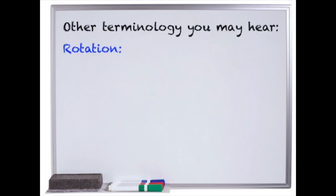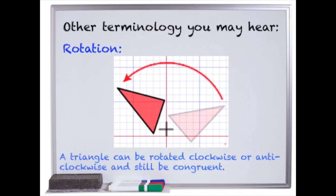Other terminology that you might hear includes rotation. Rotation is where something is spun around. If you think about a rotating tire, it spins around and around. A triangle can be rotated clockwise or counterclockwise and still be the same shape and size.